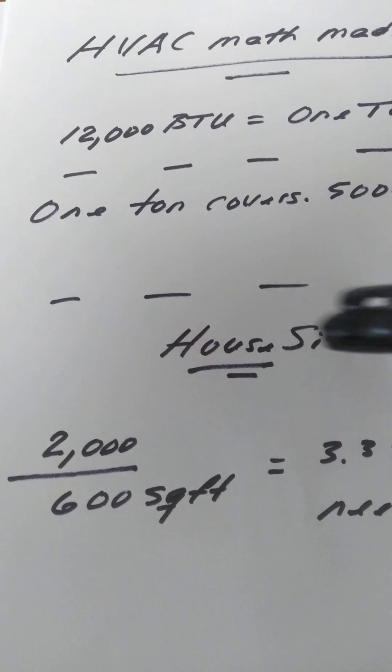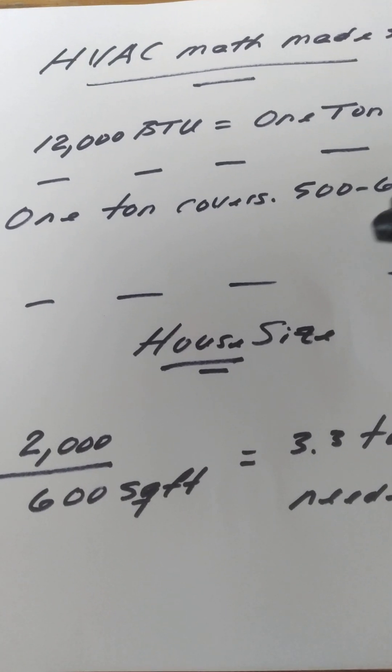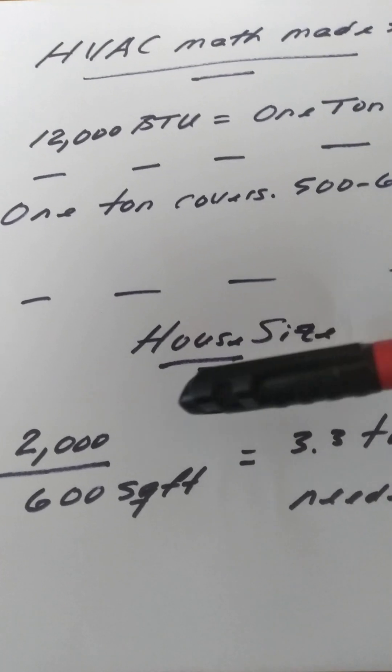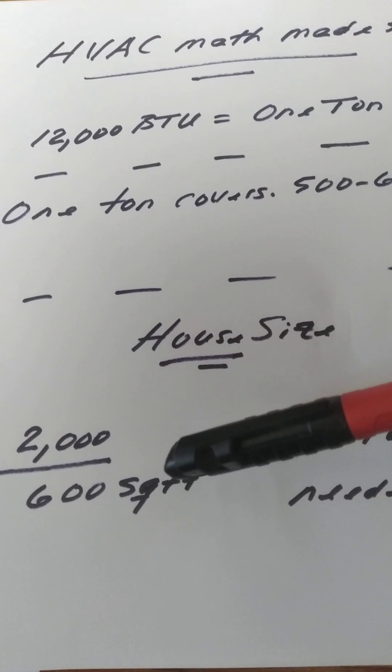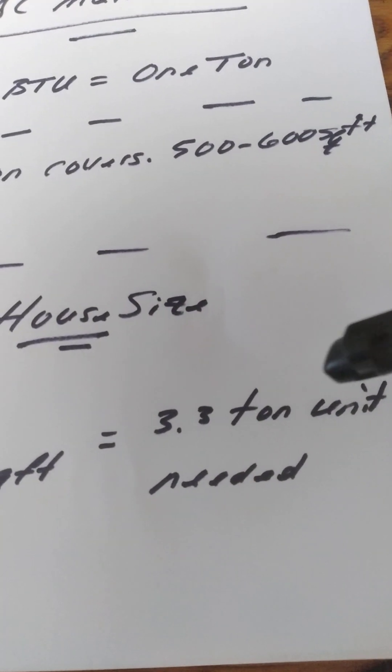A hypothetical here: let's say your house is 2,000 square feet. You know it takes between five and six hundred square feet to heat and cool, so take the 2,000 square foot house, divide by six hundred, and the answer is very simple: 3.3 ton unit.